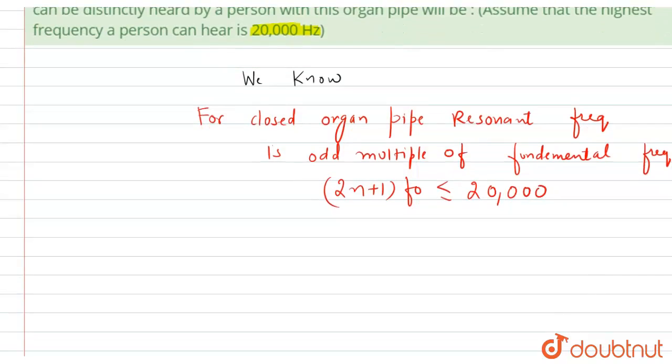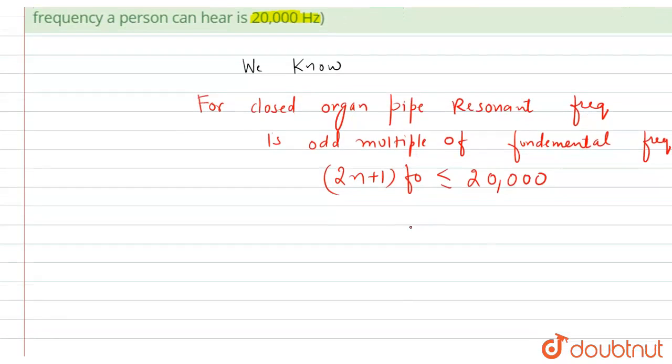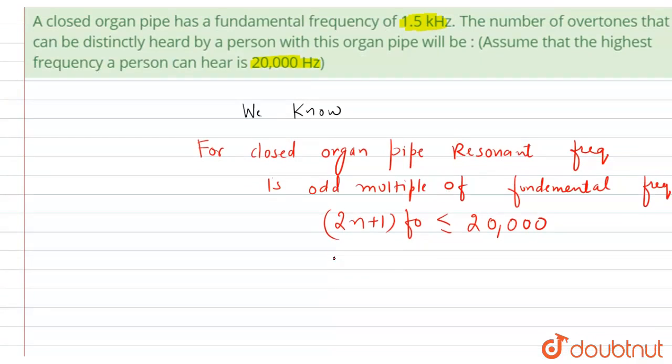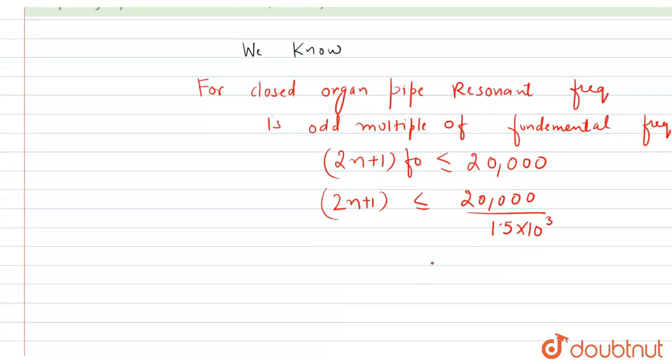Now on solving this equation, the value of the fundamental frequency is 1.5 kHz. So we can write 2n plus 1 should be less than or equal to 20,000 divided by F naught. That is 1.5 into 10 raised to power 3. That equals 15,000.